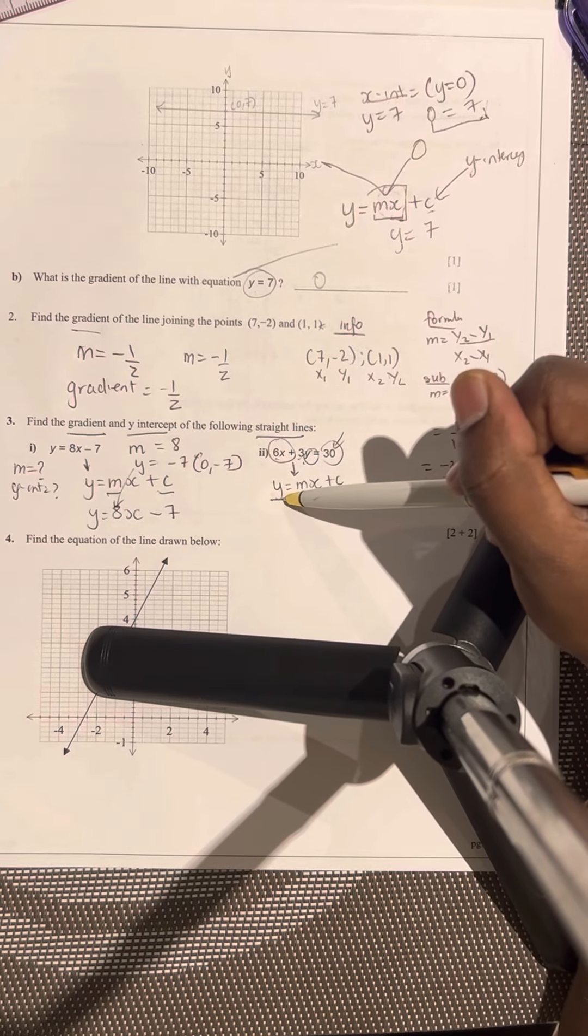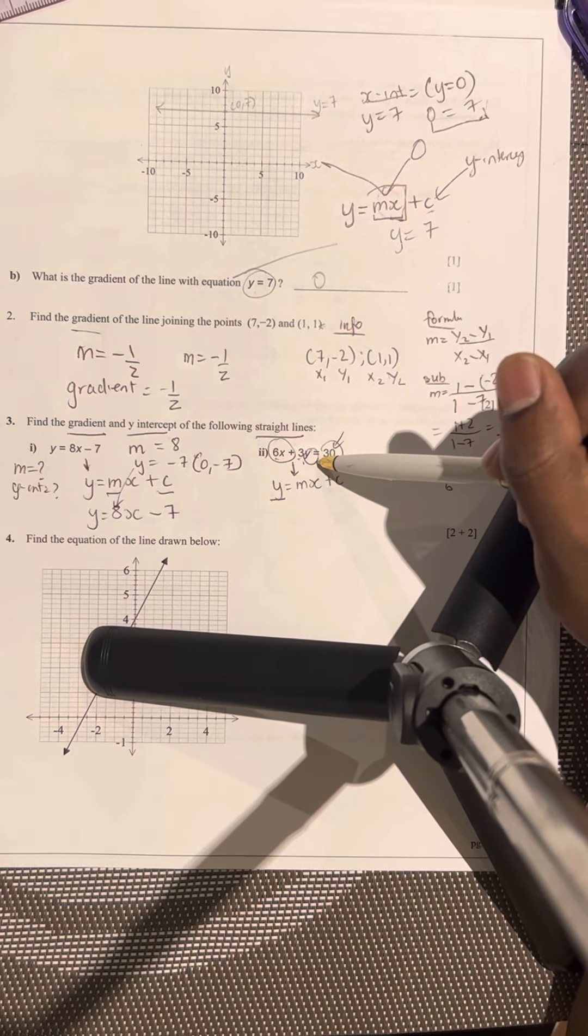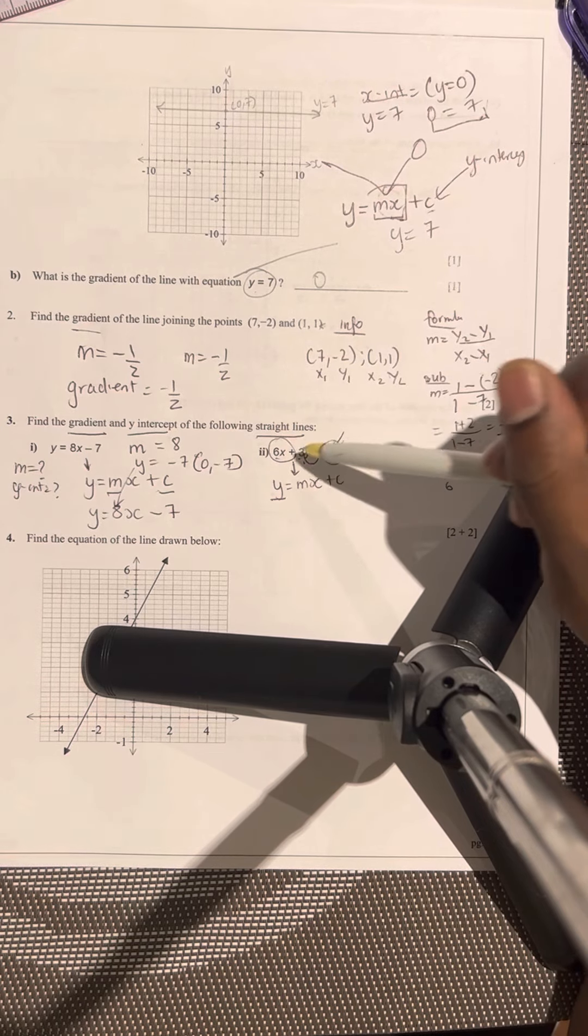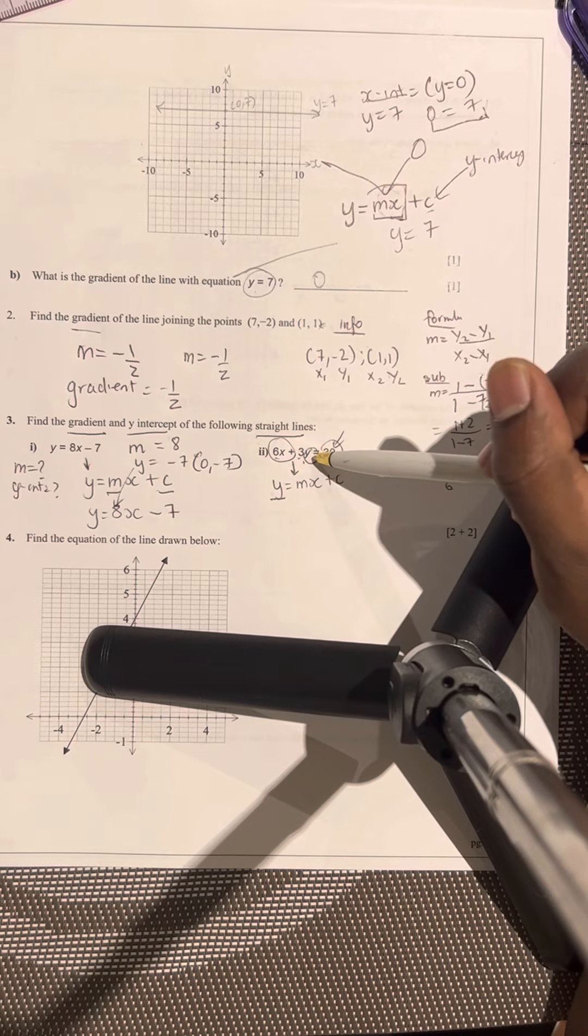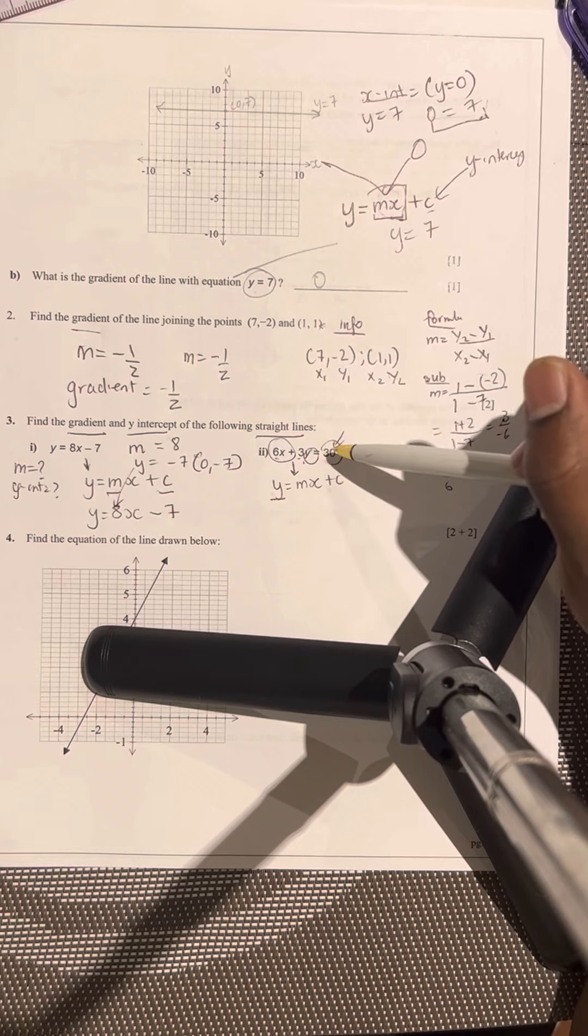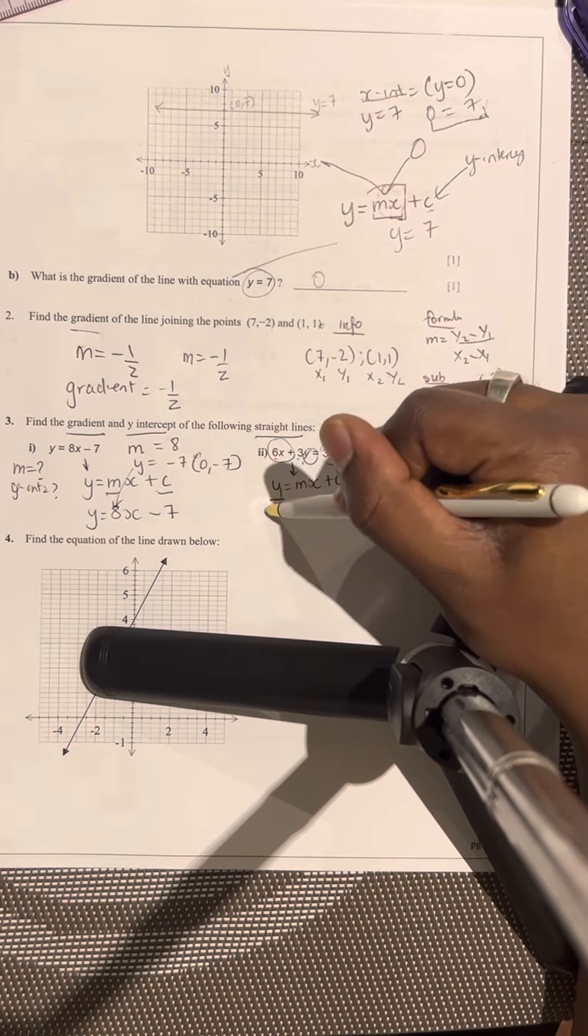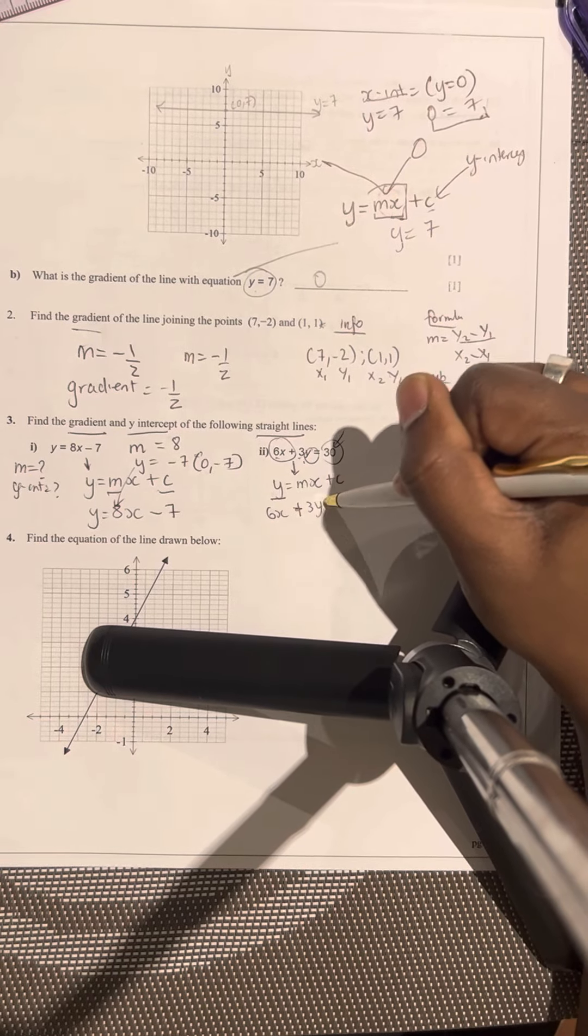It means you need to isolate y. You need to make it by itself and you need to eliminate anything that's on its side. Any variables. So we have here 6x and we've got the 3. And we've got to know what the operations are being done to this y. So in this situation, you've got 3y and 6x. So let's move. So let's write this down again. 6x plus 3y equals 30.